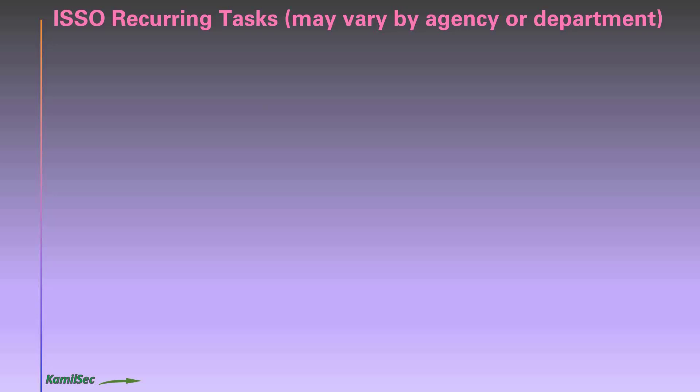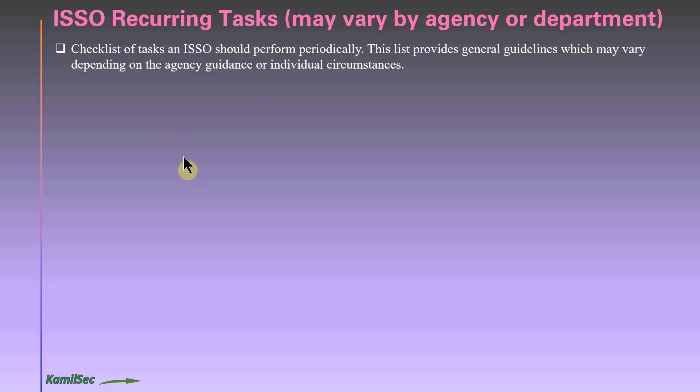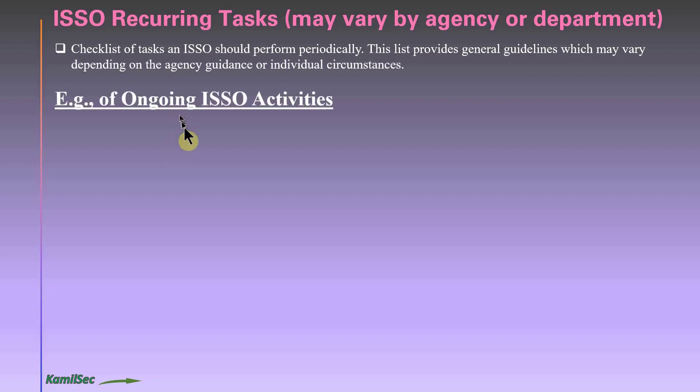Now let's look at the ISSO recurring tasks. This may vary by agency, so check with your agency to see what tasks are required at what frequency. The following checklist provides general guidelines for activities an ISSO should perform periodically.